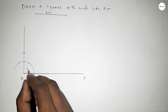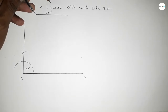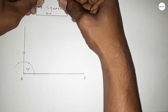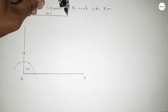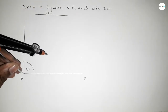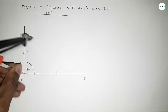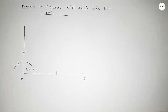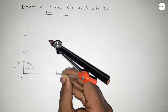Next, taking the length 6 centimeters by using compass, putting the compass on point A and cutting here with the same length.